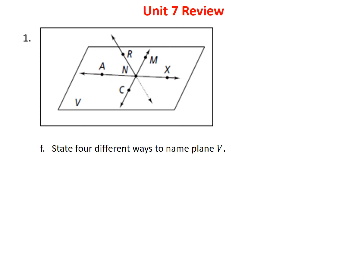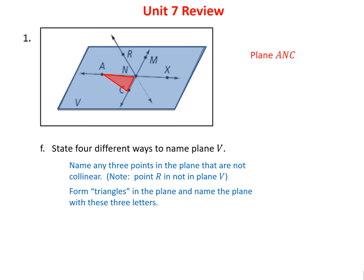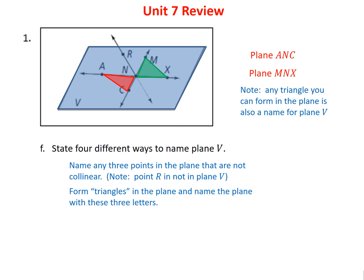Problem 1F asks us to name four different ways to name plane V. Plane V is like a table, and all the listed points are on that table except R, which is part of the line coming through the middle. I just need to name any three points in the plane that are not collinear. For example, I could name A, N, and C, or N, M, and X. Pick any three letters in the plane, don't include R, and make sure they're not on the same line.